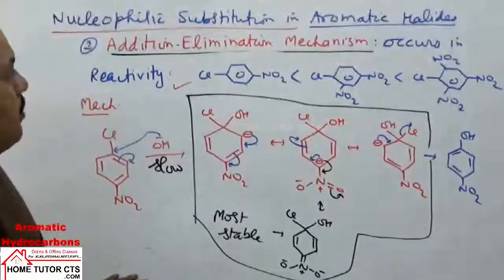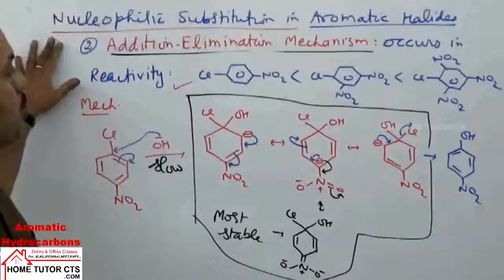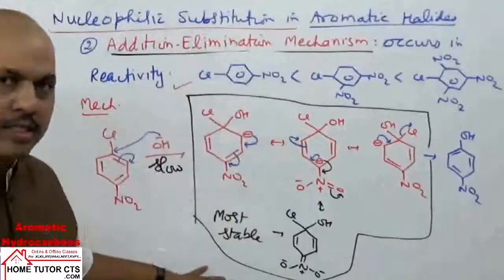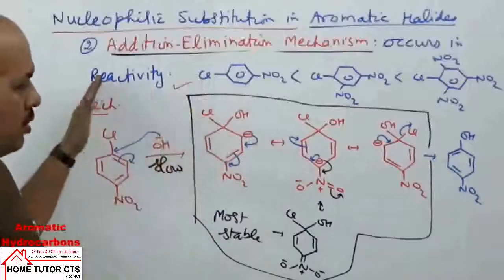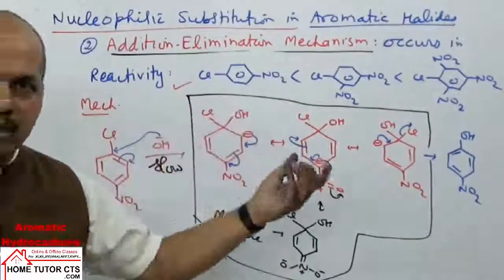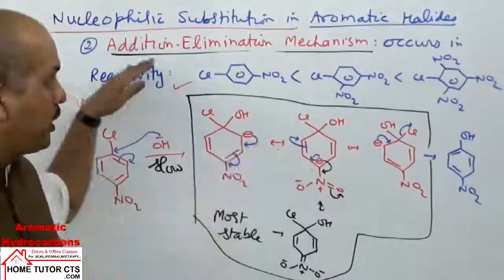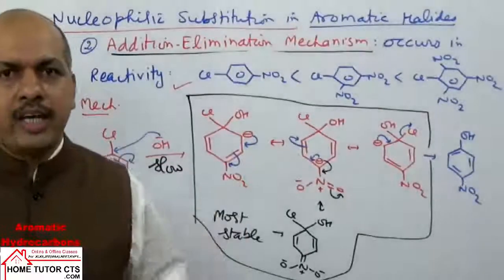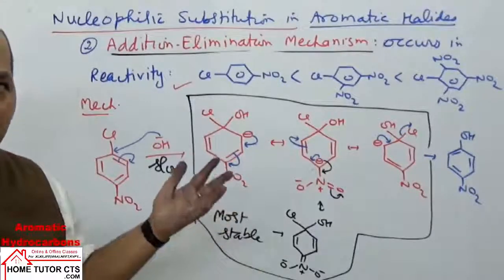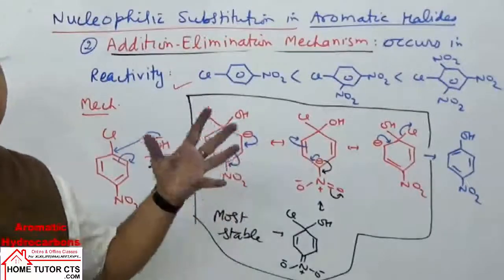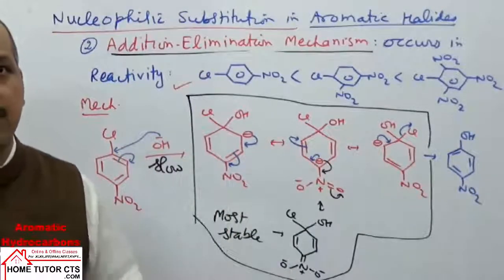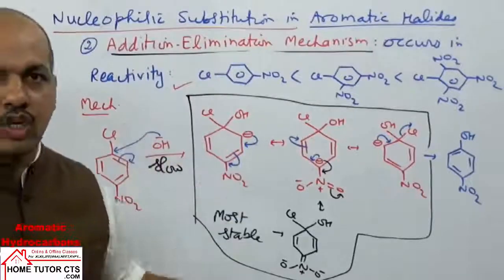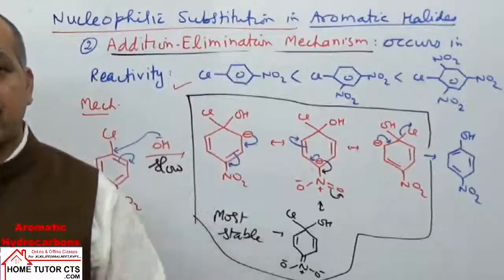This reaction is called addition-elimination mechanism because addition of OH negative occurs in the slow step first, followed by elimination of Cl negative. It is also called bimolecular mechanism because the slow step involves two reactants. This completes the topic of nucleophilic substitution reactions in aromatic halides. The next topic will be reactions of diazonium ions, which are important for preparing aromatic compounds that are difficult to prepare by simple reactions.